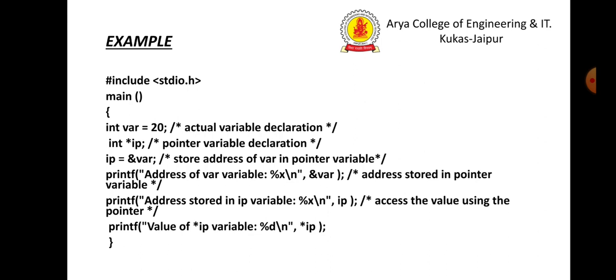Then we have printf statements. First printf uses ampersand var. As in our first example, we generate the address of var through ampersand. Second printf statement prints ip. What is ip holding? ip is holding the address of var. So in this statement we get the address of the var variable. Third printf statement uses asterisk ip. Now asterisk ip gives the value of the var variable.